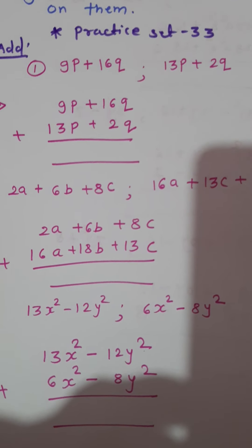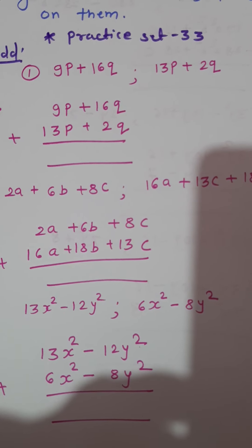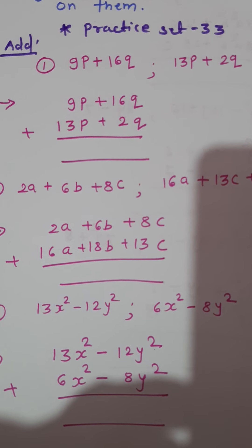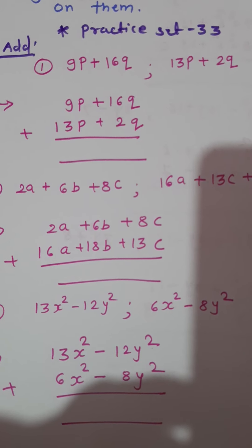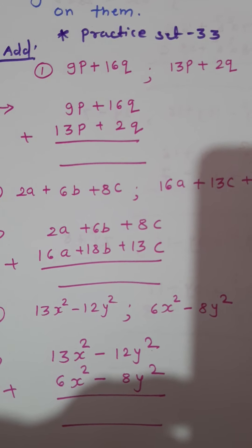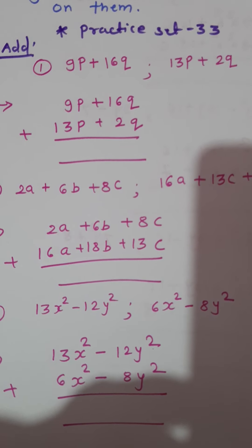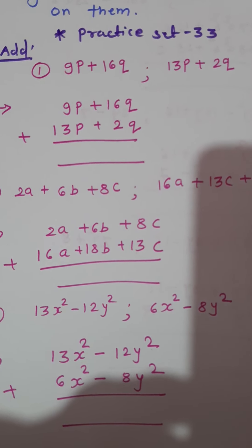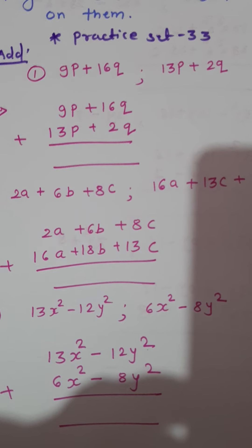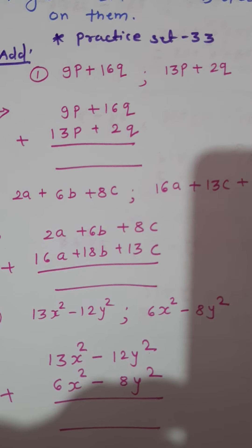The first example is given in horizontal arrangement: 9p plus 16q is the first expression, and we have to add 13p plus 2q. Let's arrange them vertically. While adding algebraic expressions, the important thing to remember is that like terms should be in a straight line, one after another. We can add only like terms — this is the most important rule.